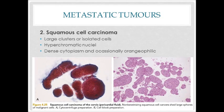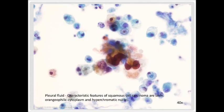Next, squamous cell carcinoma. The metastatic cells can appear in large clusters or as isolated cells. They have hyperchromatic nuclei, dense cytoplasm, and are occasionally orangophilic. In the bottom image, orangophilic and large clusters of cells can be seen in the metastatic cervical squamous cell carcinoma appearing in pericardial fluid. In this next image, metastatic squamous cell carcinoma in pleural fluid is confirmed by the orangophilic staining and hyperchromatic nuclei.